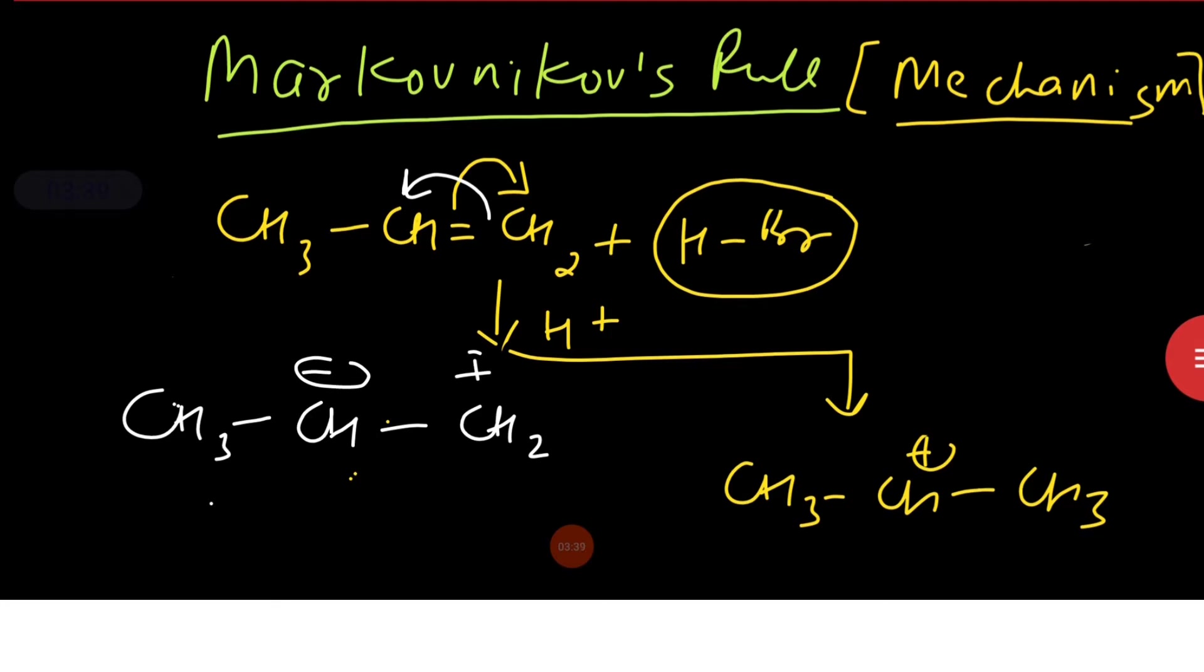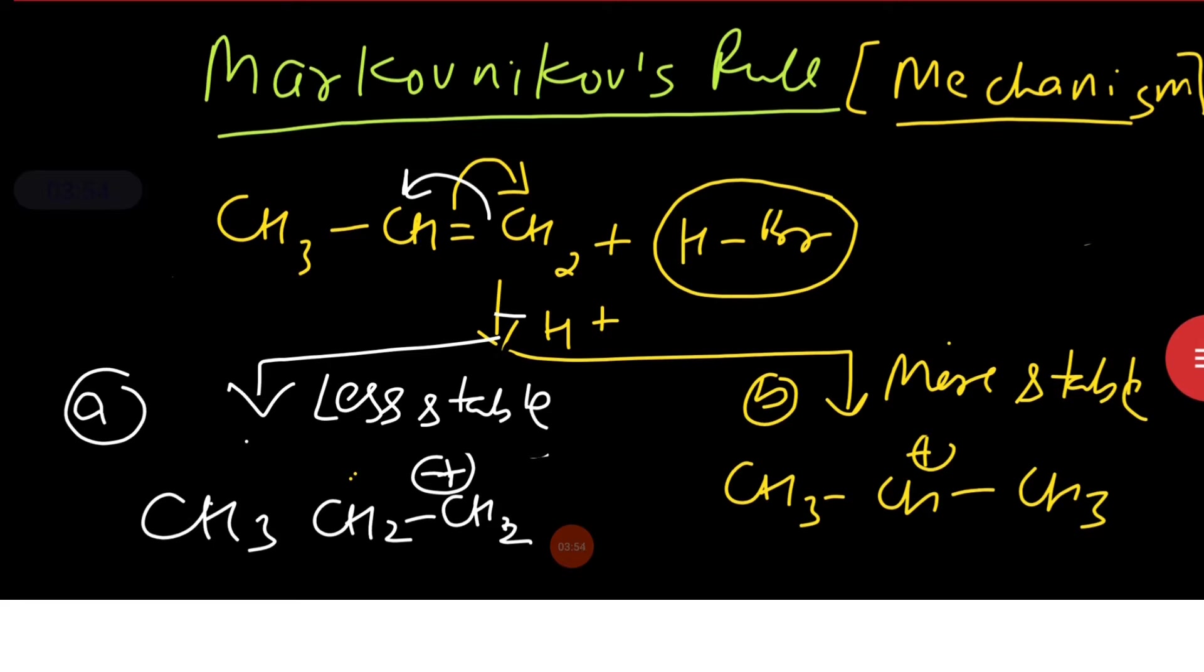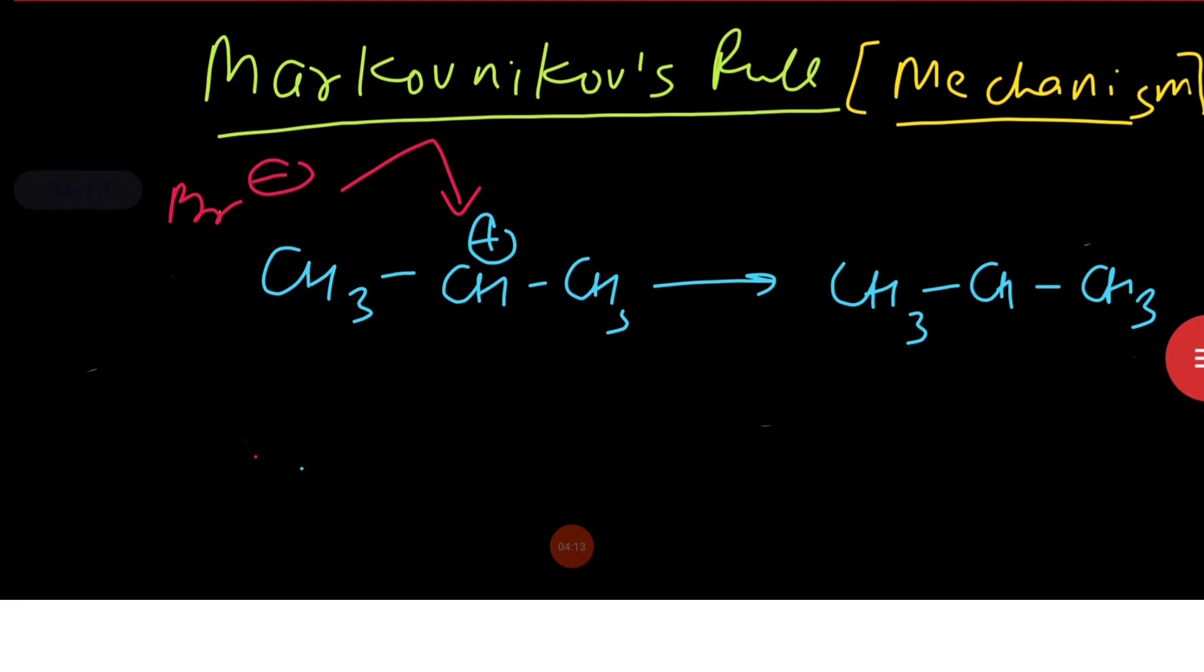this carbocation is formed and on this H plus attacks and forms primary carbocation. Now a primary carbocation is less stable as compared to the secondary carbocation.